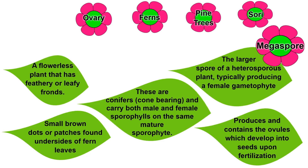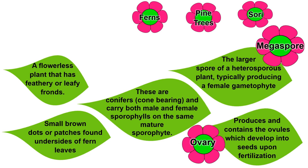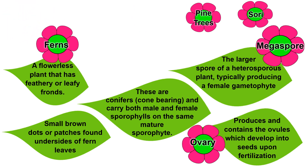The next one is Ovary. Okay, it goes with this one: produces and contains the ovules which develop into seeds upon fertilization. The next flower is Ferns, and ferns are here: a flowerless plant that has feathery or leafy fronds.